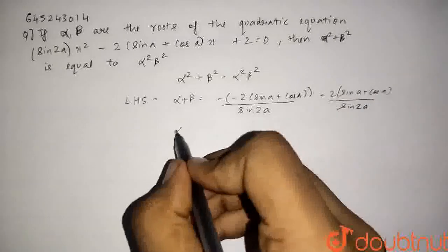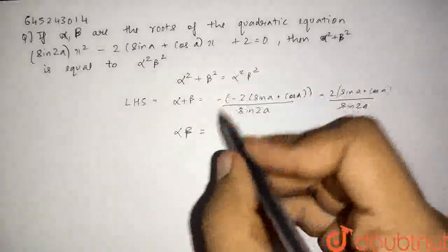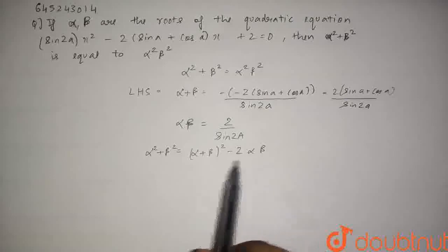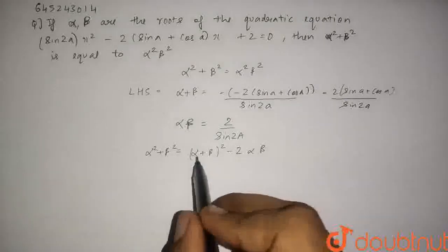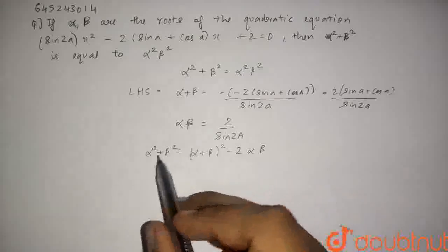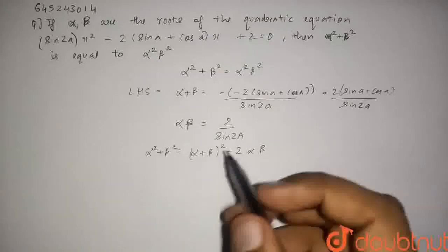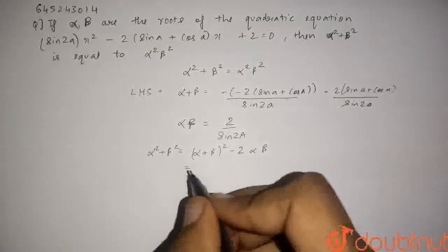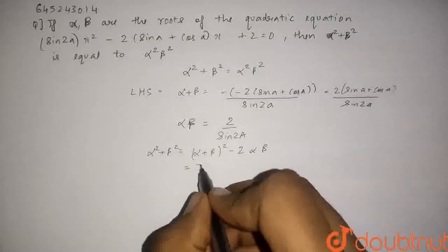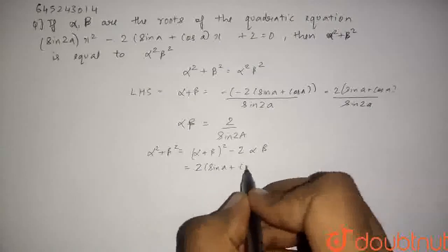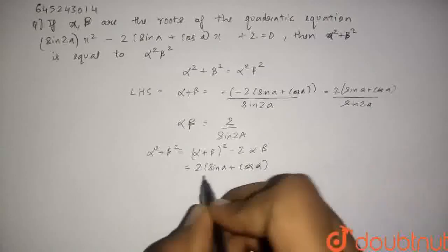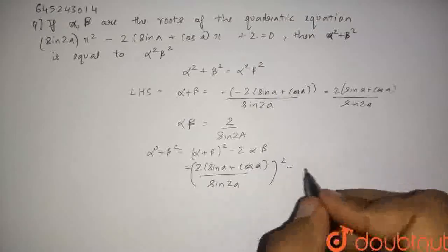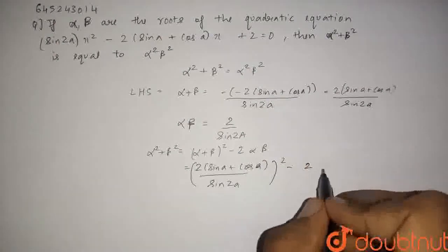Similarly, the product of the roots: alpha times beta equals c by a. Now, since alpha squared plus beta squared equals (alpha plus beta) whole squared minus 2 alpha beta, we substitute the values: that is (2 sin(a) + cos(a)) upon sin(2a), the whole squared, minus 2 times (2 sin(a)) upon sin(2a).